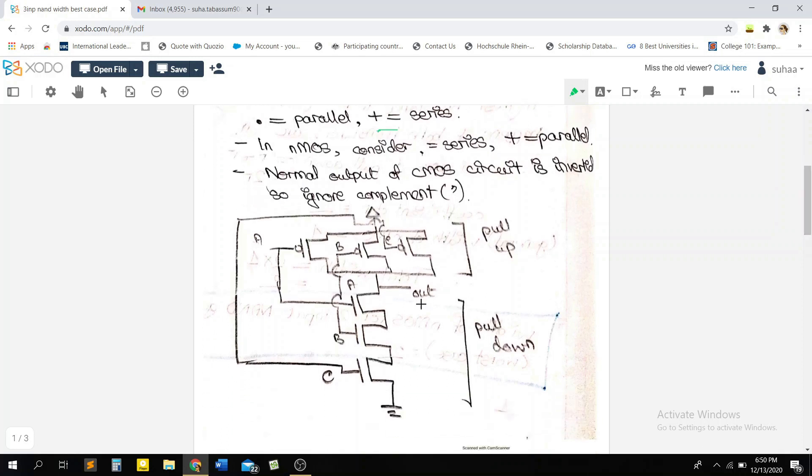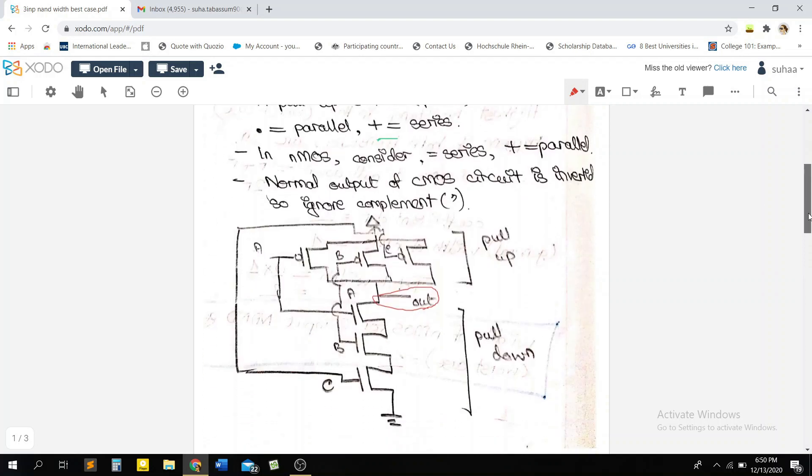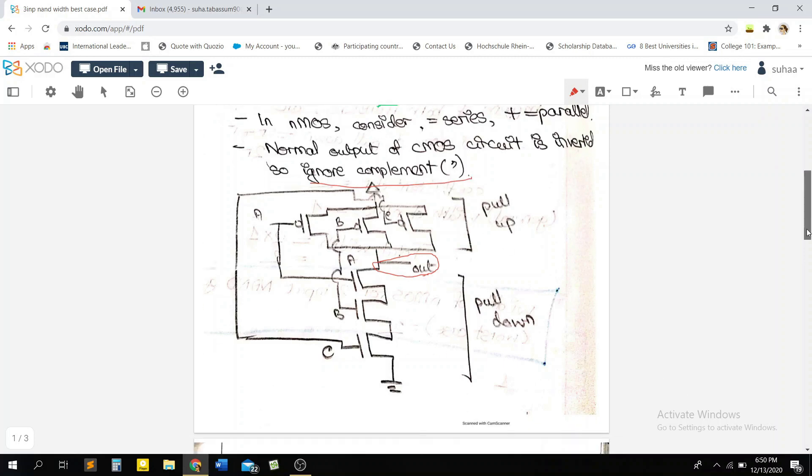So our output is here and I'm just going to mark that. Oh, one more thing that you need to know, you should already probably know this, that we're considering the dot here and we're ignoring this complement sign because for every CMOS circuit, it's automatically complemented. There is an invisible not gate here somewhere, which is why we can just ignore the complement in this case. So this is our final circuit for a three input NAND gate.